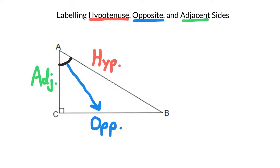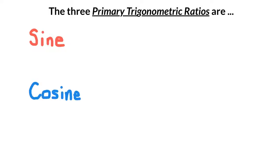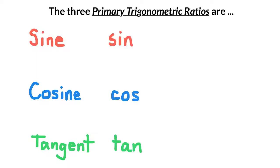We can use this terminology to talk about the primary trigonometric ratios. The three primary trigonometric ratios are sine, cosine, and tangent. You won't want to write out the words every time, so they each have their own symbol: sin, cos, and tan. And these ratios are referring to the reference angle.